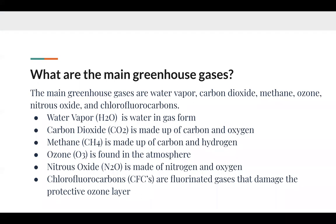We also have ozone, O3 — three oxygen molecules found in the atmosphere. This protects us from the sun's radiation. Without the ozone, sunlight would go straight into the earth and we'd be absorbing ultraviolet rays, which can cause problems such as cancer.